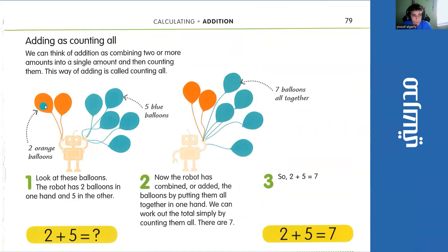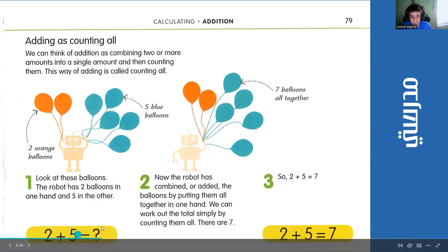You have 1, 2 orange balloons, and 1, 2, 3, 4, 5 blue balloons. If you want to add them, all you have to do is count all of them: 1, 2, 3, 4, 5, 6, 7. So, 2 plus 5 equals 7.